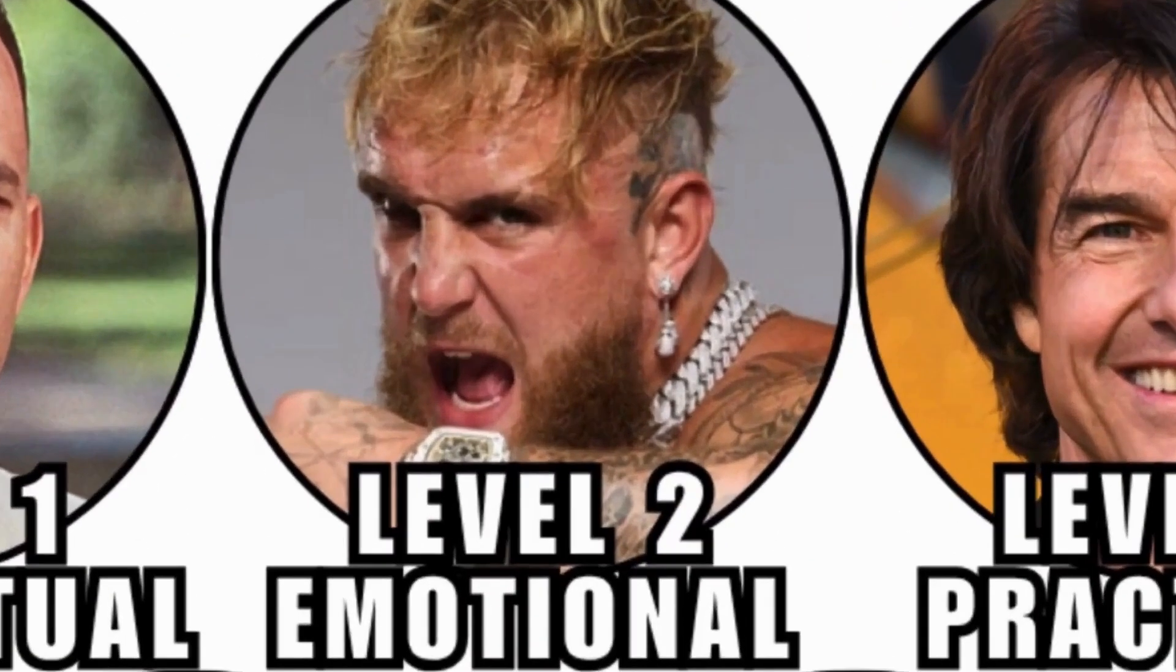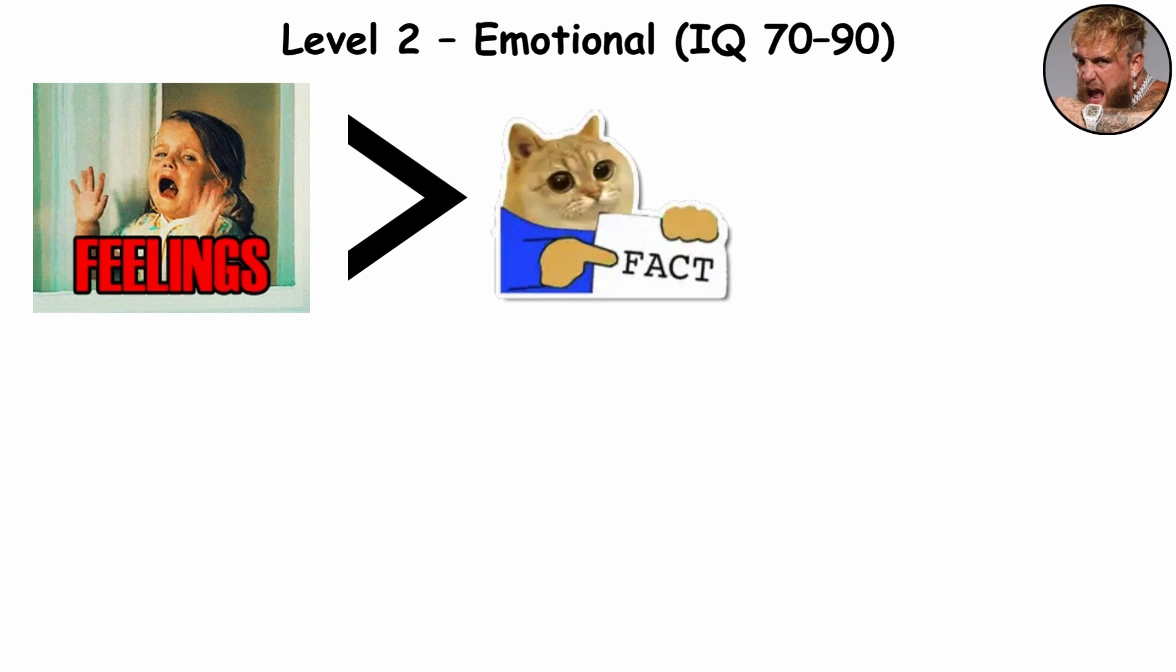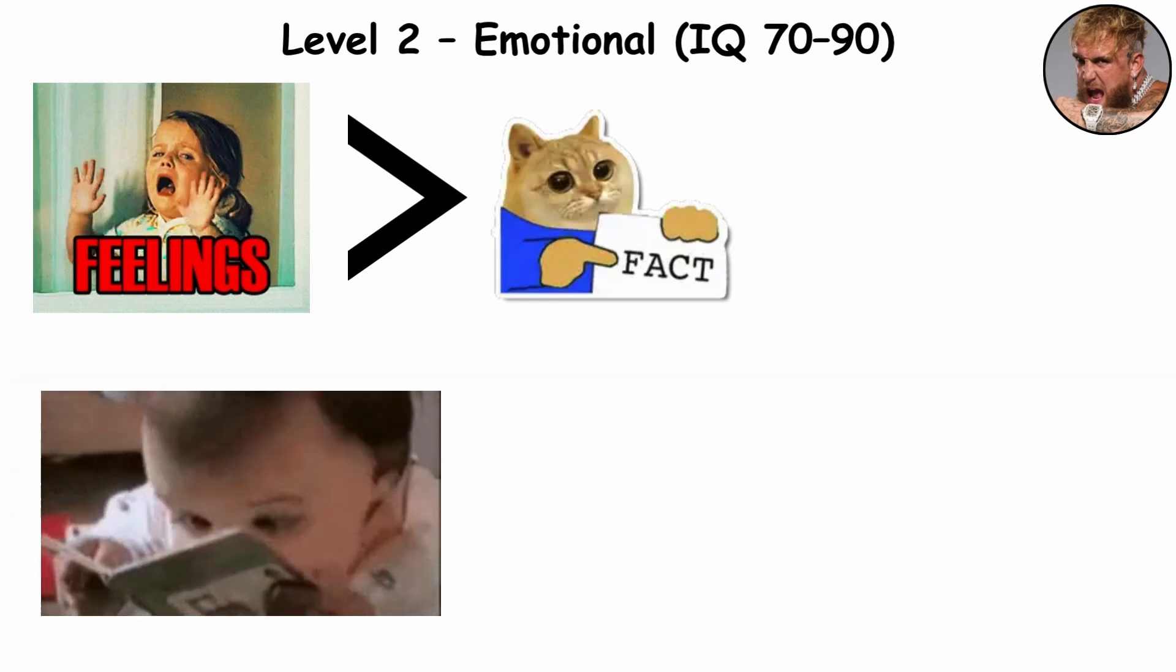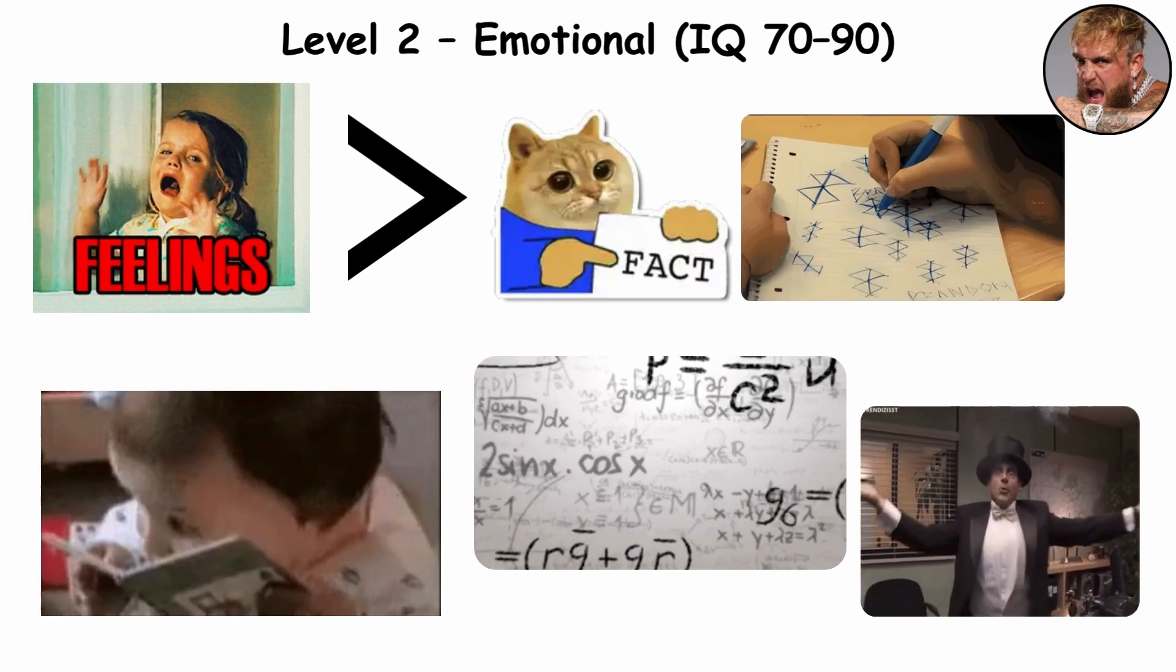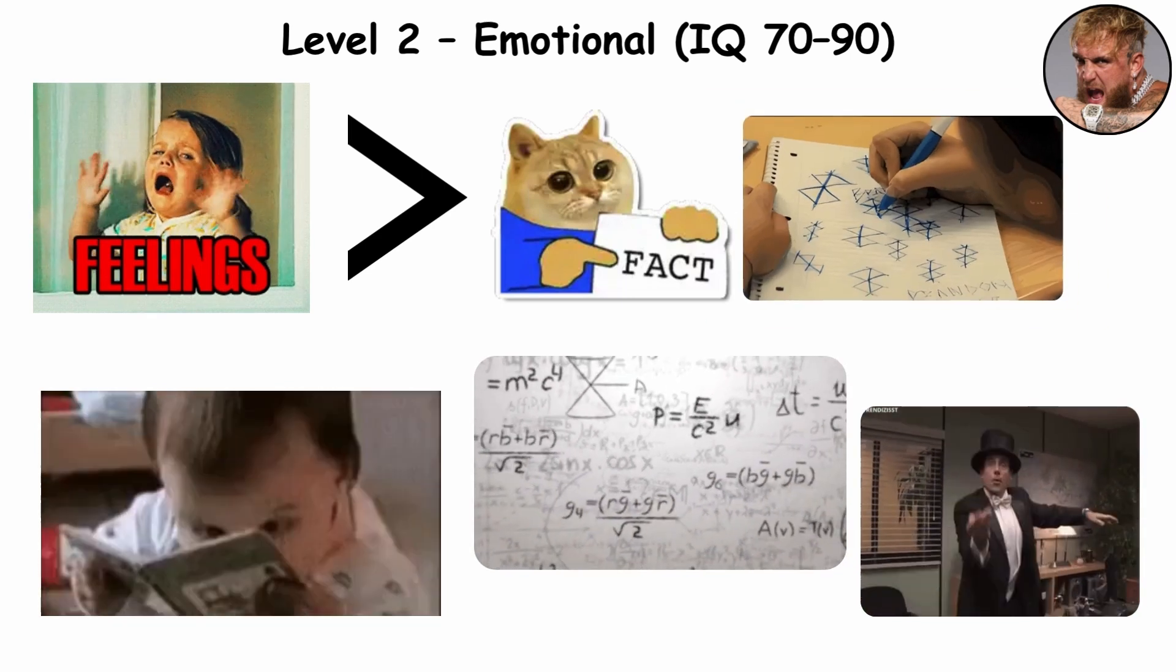Level 2. Emotional. This is the feelings-before-facts zone, where people read moods better than memos. In school, algebra with letters can feel like a magic trick, and open-ended essays turn into doodling in the margins.